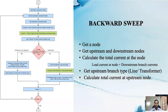In the backward sweep, we first get a node and retrieve the upstream and downstream nodes. Then we calculate the total current at the node, and based on the upstream branch type, we calculate the total current at the upstream branch and upstream nodes.